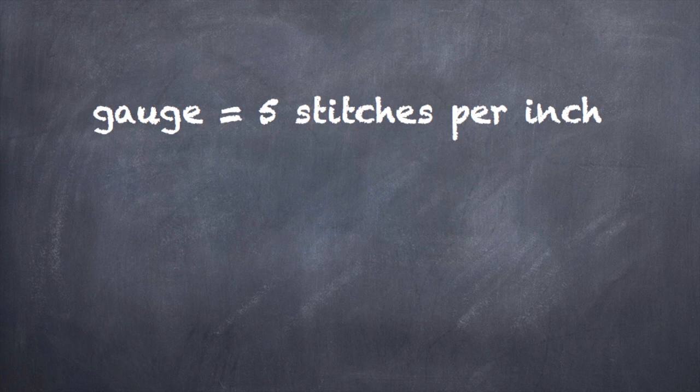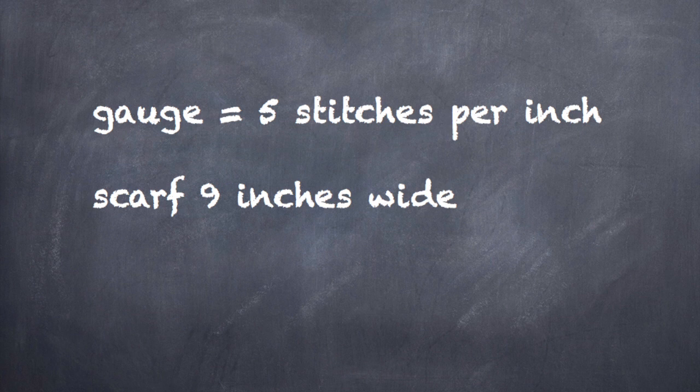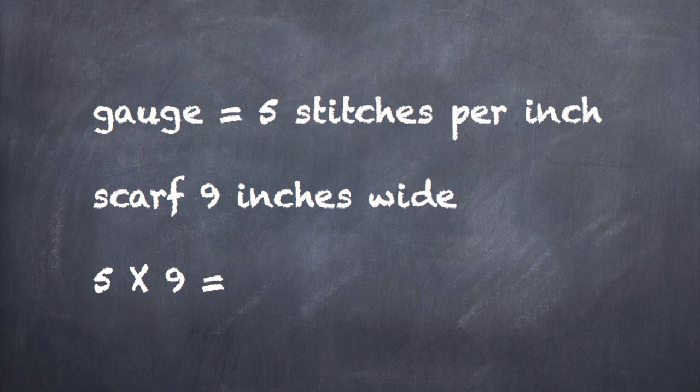Let's say that we are knitting a scarf project and our gauge is five stitches per inch. And we want to make our scarf nine inches wide. So we know that we need five stitches per inch. So we will multiply five times nine and that will give us 45 stitches.